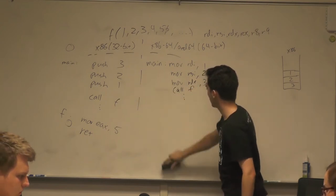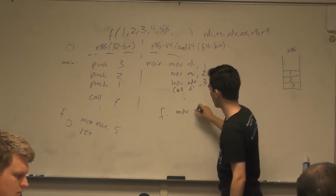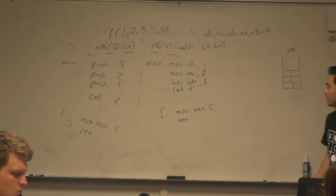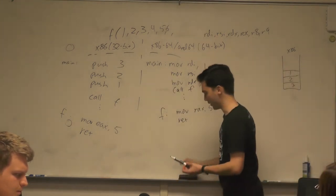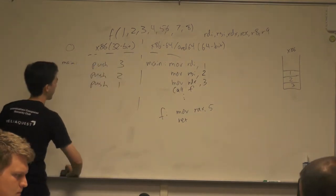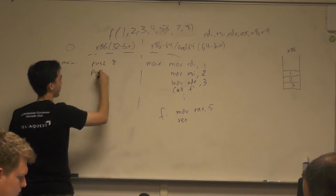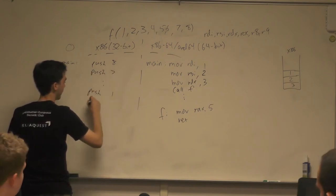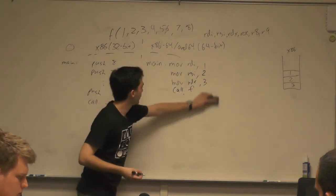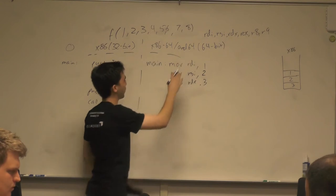After the call there might be more code. In our case f just returns 5, so we move 5 into RAX and return. Let's see an example with more arguments — say seven and eight. On 32-bit, we push 8, 7, down to 1, then call f. On AMD64, the first six go into registers.